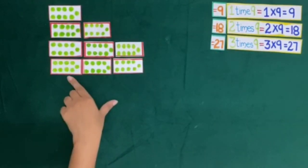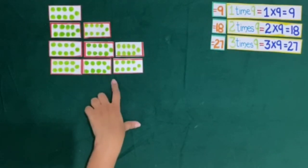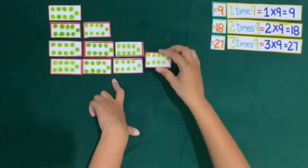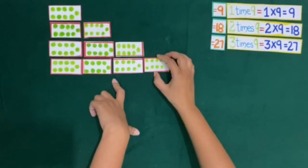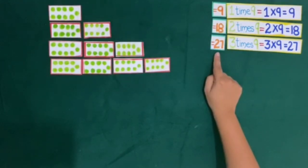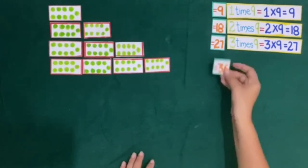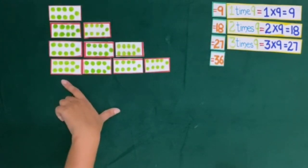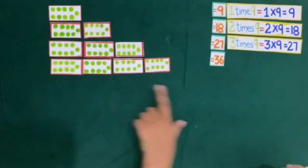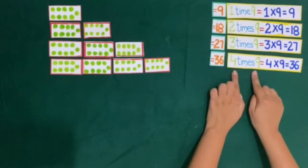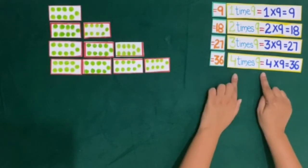Now here we have 3 cards of 9 dots. If we add one more card of 9 dots, then 27 plus 9 is equal to 36. So now we have 4 cards of 9 dots, and 4 times 9 is equal to 36.